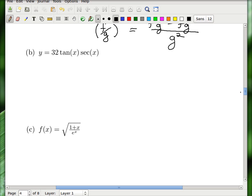B is testing you on the product rule. And I guess it also assumes that you know the derivative of tangent and the derivative of secant. So let me remind you what the product rule says. It says if you have a product of two functions, and you take the derivative, then the rule is f prime g plus f g prime. So we'll put 32 tangent here with tangent, call that f, call this g.